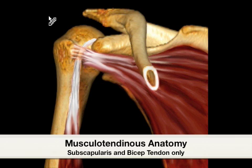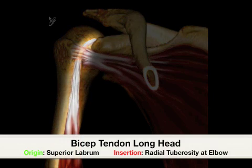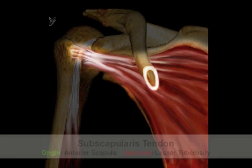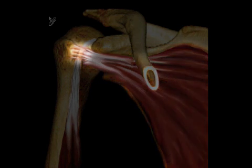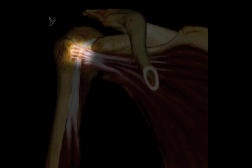We will be reviewing the anterior musculotendinous anatomy, beginning with the biceps tendon longhead, which originates at the superior labrum and inserts at the distal elbow at the radial tuberosity. Next is the subscapularis tendon, which originates at the anterior scapula and inserts to the lesser tuberosity. Also originating from the anterior surface of the subscapularis is the transverse humeral ligament, which anchors the bicep tendon in place over the bicipital groove.